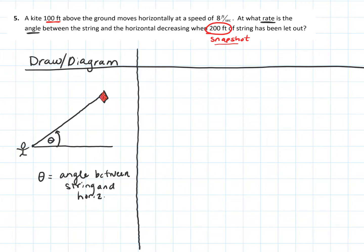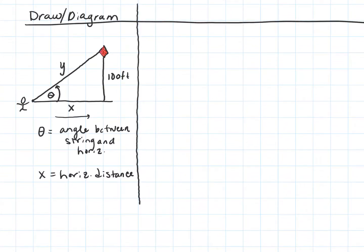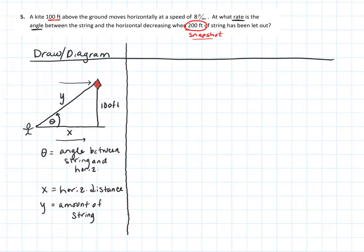The kite flies 100 feet above the ground — that's a fixed value. We'll call the horizontal distance X; X is changing as the wind blows the kite along. We'll call Y the amount of string from the hand to the kite. All three variables — theta, X, and Y — are changing in this scenario.